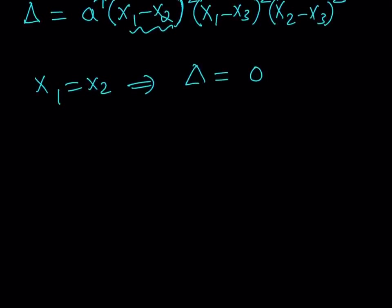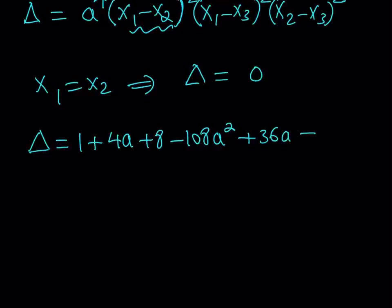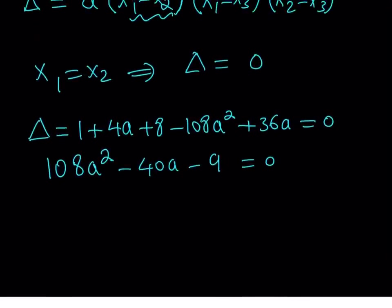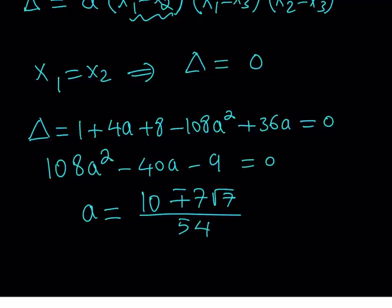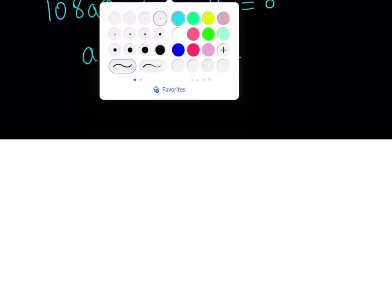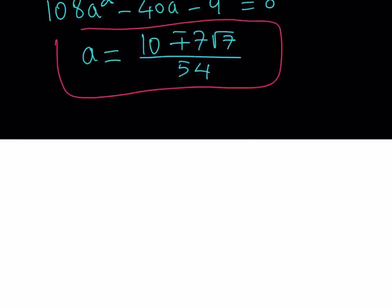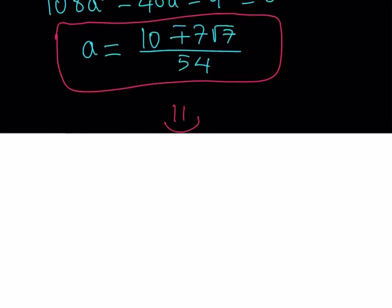This is similar to quadratic equations. If you plug everything into the discriminant — the a, b, c, d values — you get: 1 plus 4a plus 8 minus 108a squared plus 36a equals zero, which simplifies to 108a squared minus 40a minus 9 equals zero. This is nice because we're using the discriminant for the cubic — which is quite rare — and we get the a values directly. Solving this quadratic by any means gives us the same solutions as before, and that's the end of the second method. Thank you for watching! Please comment, like, and subscribe — I'll see you tomorrow with another video. Until then, be safe, take care, and bye bye.